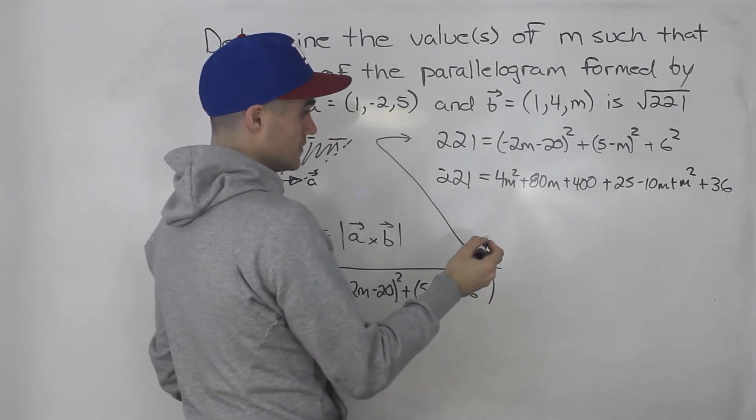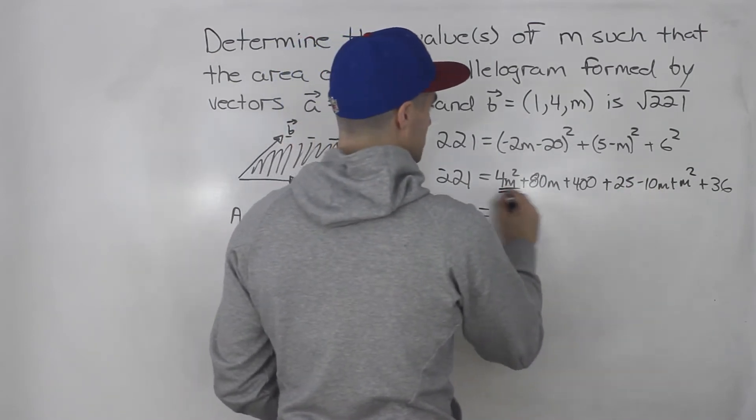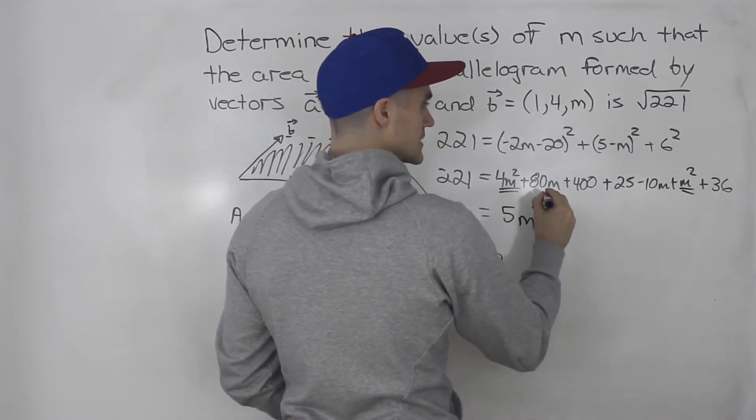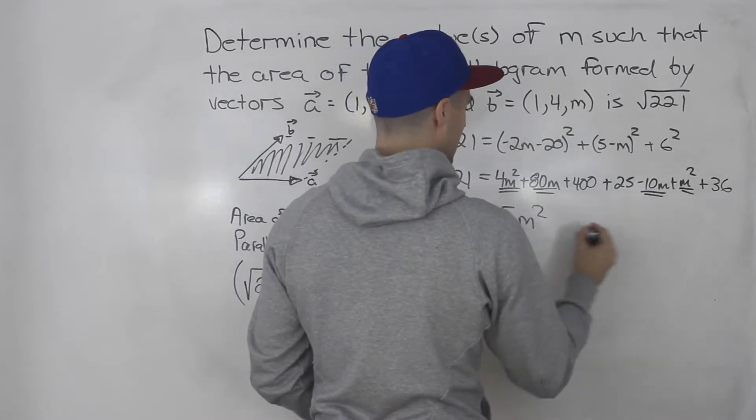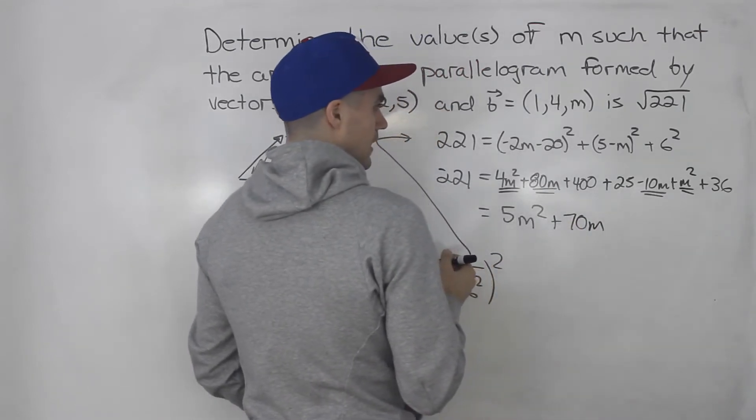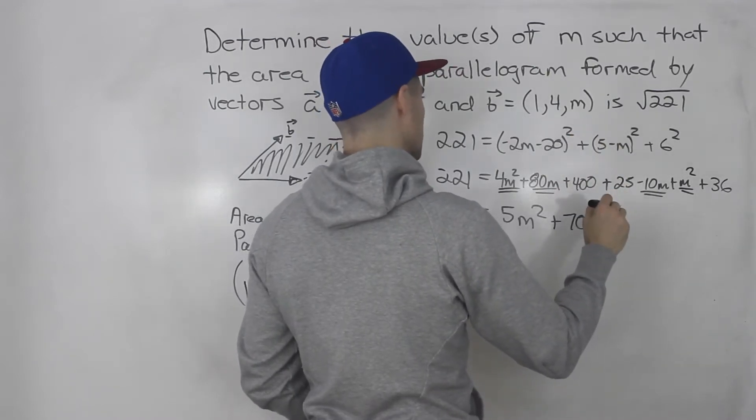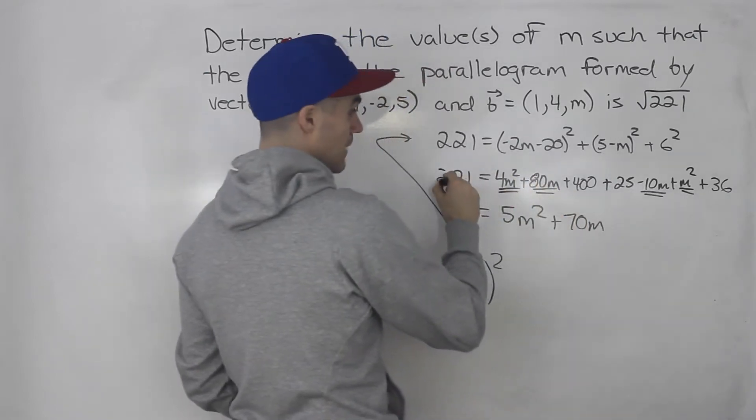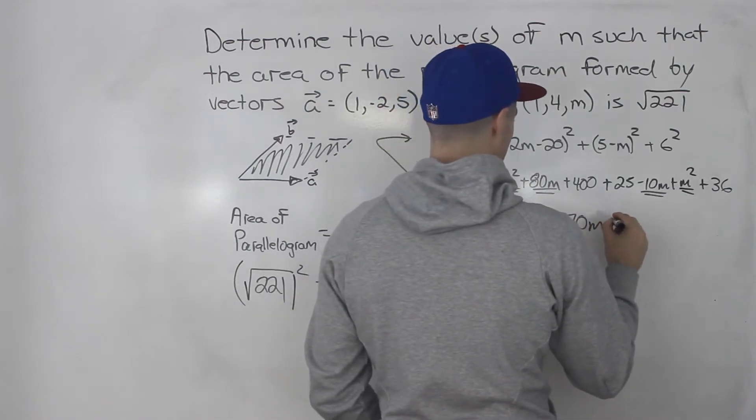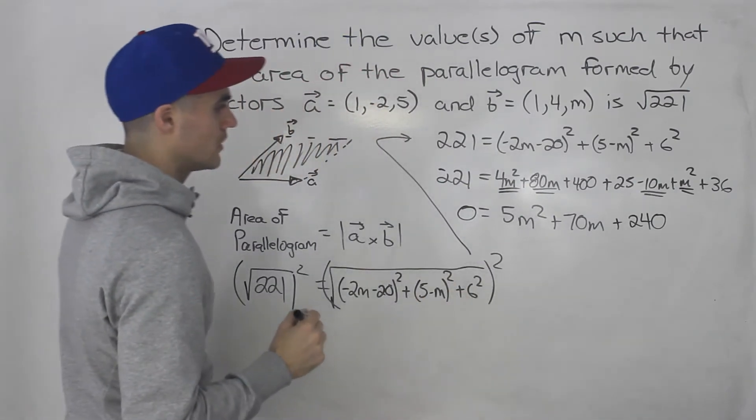Now we can bring this 221 over to the right side, so we'd have minus 221 on the end, and then we can collect all the like terms. We got 4m squared plus m squared, that's 5m squared. We got 80m minus 10m, which is 70m. And then we would have 400 plus 25, 425 plus 36, that would give us 461 minus 221, because we're bringing it over. 461 minus 221 gives us 240, and then we're just left with 0 on the left side.